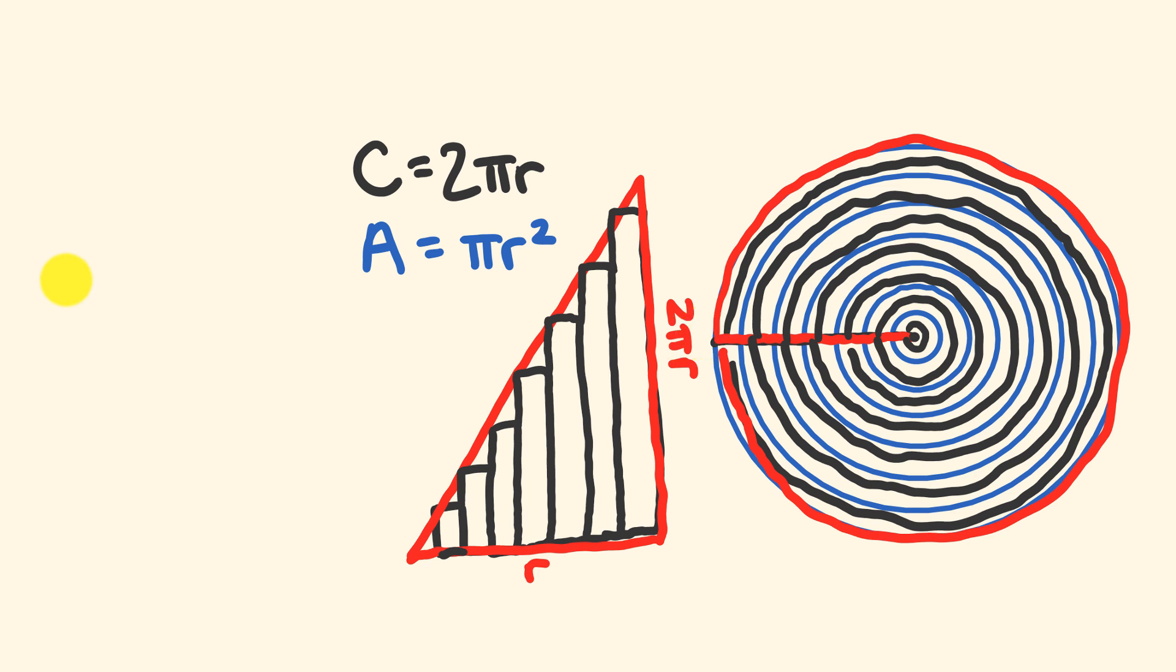So let's use the area of a triangle. The area of a triangle is equal to the base times the height divided by 2. So what is the base of this triangle here? It's equal to the radius. What's the height of our triangle? Well, the height, that's the same as the circumference. That's equal to 2 pi r. The whole lot of this goes over 2.